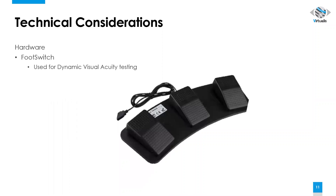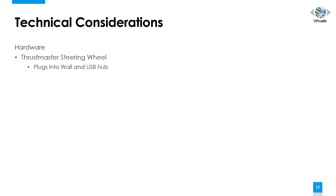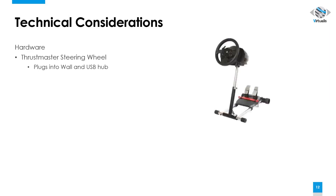Another piece of hardware that you should see with your system is the foot switch. This is also used for dynamic visual acuity testing. The Thrustmaster steering wheel is the device used for car simulation and driver modules.